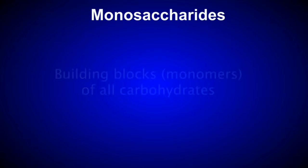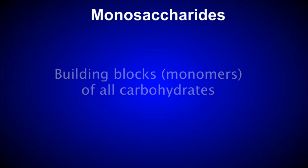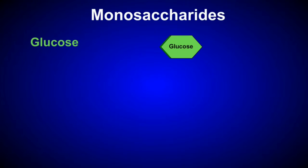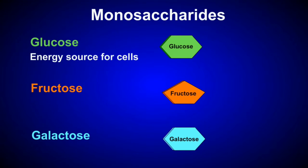Let's talk about monosaccharides first. Monosaccharides are the building blocks, or monomers, of all carbohydrates. Common monosaccharides include glucose, fructose, and galactose. Glucose is by far the most abundant monosaccharide. It's water-soluble, easily transported through an organism, and is the energy source for cellular respiration and the production of ATP.